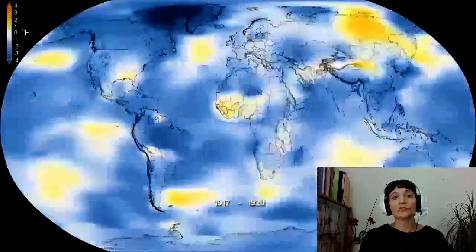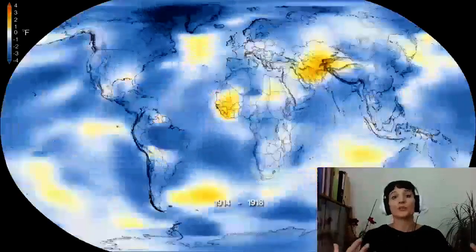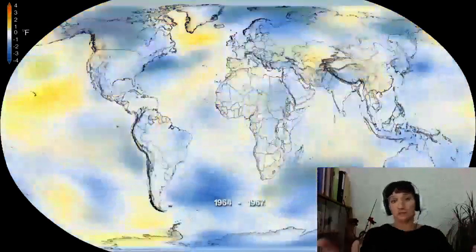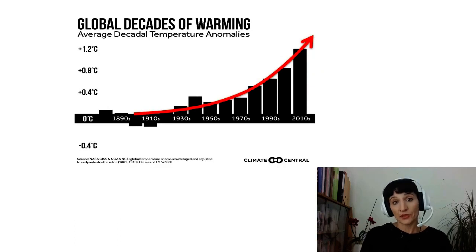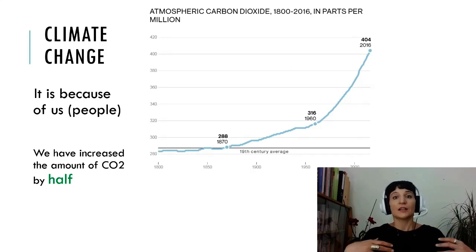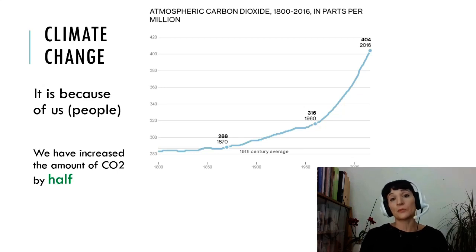This effect is being measured, and this is a picture from NASA showing the anomaly of temperature — how much the temperature has increased on the globe. You can see that in most parts of the globe the temperature is increasing. Looking at the average temperature for each decade, it is very obvious that the temperature is increasing since the industrial revolution. We have increased the amount of CO2 by more than half, and we know this is because of the burning of fossil fuels.